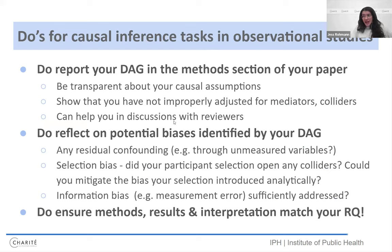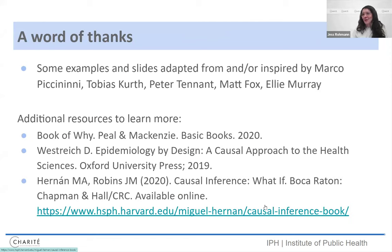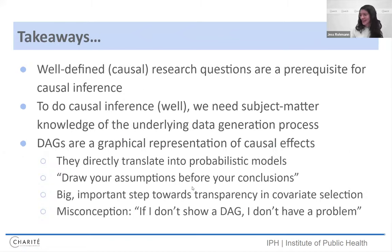I would suggest that you report these DAGs in the method sections of your paper. If you use them, I think it's a really great tool to have discussions, for example, with peer reviewers about your causal assumptions. It's the opposite of black box approaches, basically. And you should also reflect on potential biases identified by your DAG and address them. And as always, ensure that your methods, results, and interpretation match your research question. I think I will just close here. So we have some time to discuss. I'll leave it on my takeaway slide. And I just want to thank some of my colleagues who inspired this talk and leave you with also some additional resources. You can learn more. I'm happy to share these slides. I know it was a lot of content and I'm eager to hear what you think.